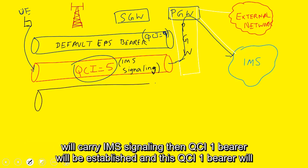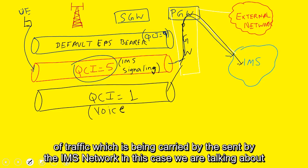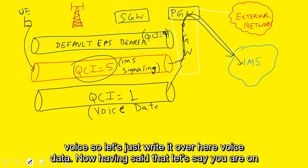So once QCI5 will carry IMS signaling, then QCI1 bearer will be established and this QCI1 bearer will be used to carry voice traffic. So this will be actually used for your voice traffic or any kind of traffic which is sent by the IMS network. In this case, we are talking about voice. So let's just write it over here, voice data.